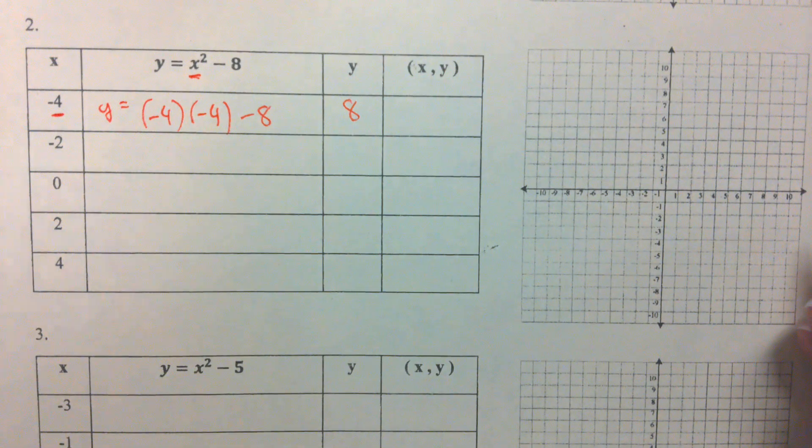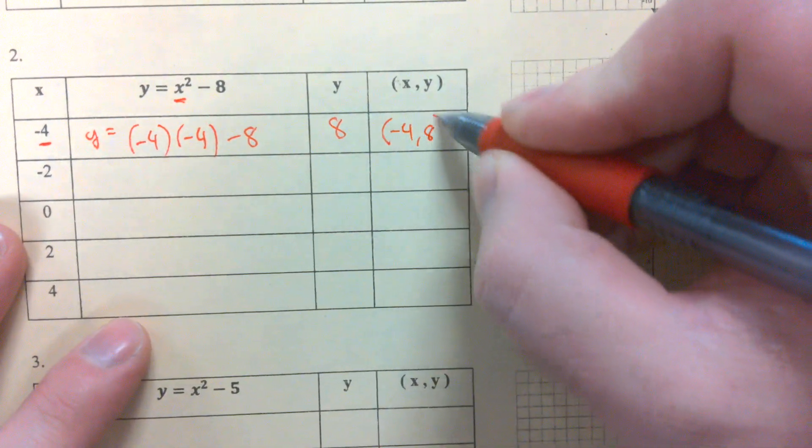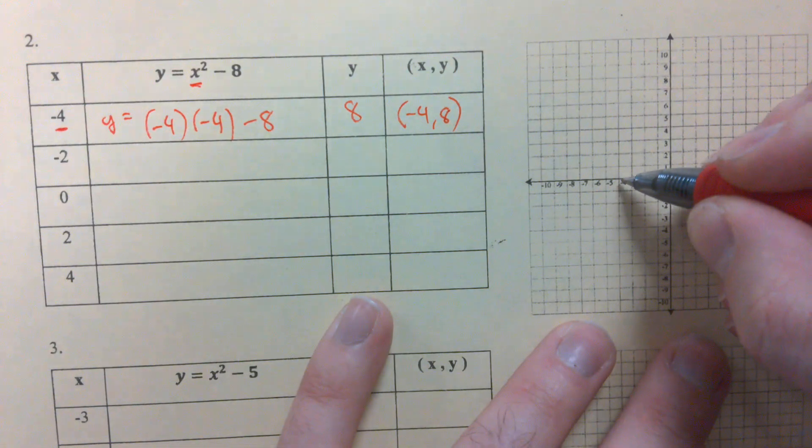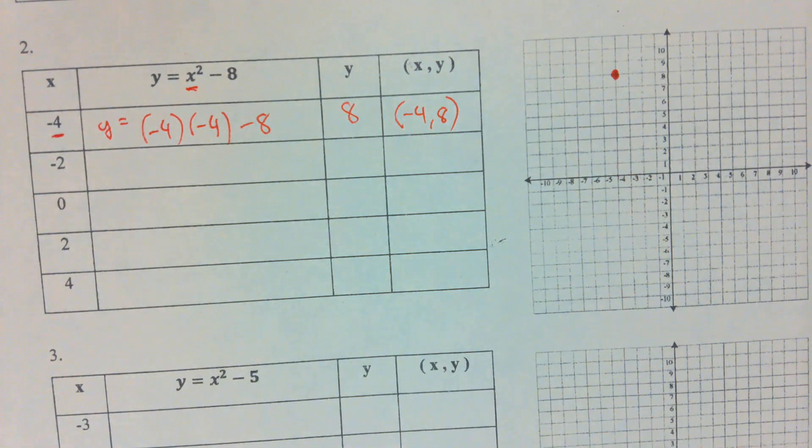There you go. Thank you. So my x comma y, negative 4 comma 8. We want to plot that. We go 4 to the left and 8 up. We make our first dot right there.